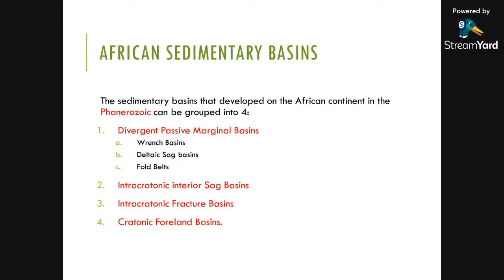In Africa, the Atlantic coast and the Indian Ocean coast are basically passive margins. They formed when North America and South America separated from Africa in the Triassic to Cretaceous, and when India and Madagascar separated from Eastern Africa in the Jurassic. These basins are very thick and have not been affected by much thermal activity, so their geothermal gradients are relatively low. Some Atlantic margin basins are affected by strike-slip faults, precursors to the current transform faults in the Atlantic, forming wrench basins.